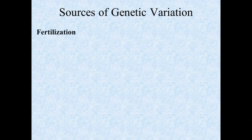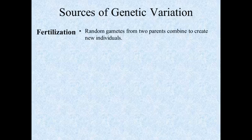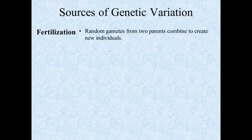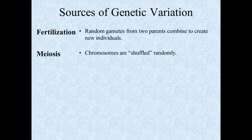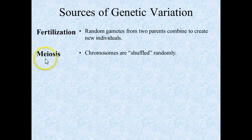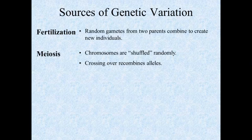There are three sources of genetic variation we've discussed so far. The first occurs during fertilization, where you have a mixture of gametes from each parent. Out of the millions and millions of combinations present in both parents, those combine to create new individuals. The variation in those gametes comes from meiosis, where chromosomes get shuffled randomly — each individual's gametes are a random shuffling of the chromosomes inherited from each parent. The other thing that happens in meiosis is crossing over, which recombines alleles.